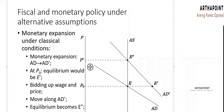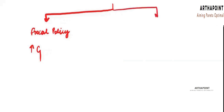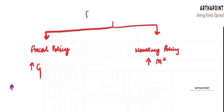Now, we understand what happens under a monetary policy. Let me first lay out the mechanism for you to understand it better. Under monetary policy, there is an increase in the level of the money supply. Now, when we were supposedly initially already at full employment level.